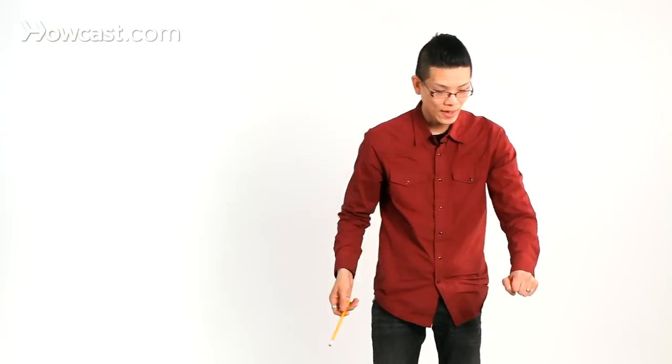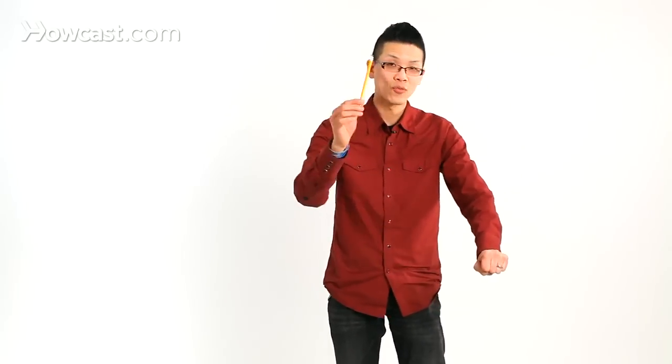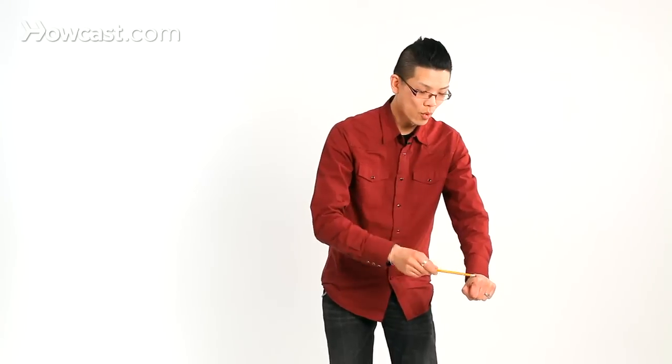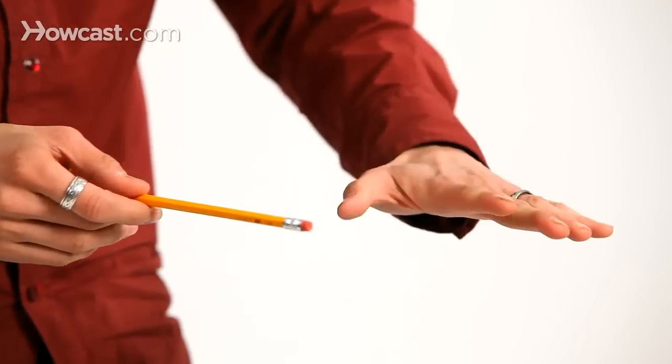So now, your hand comes back out. The bill's no longer there. You say the real magic's going to happen now on the count of three. One, two, three, and the bill vanishes. And that's the explanation for the pencil and bill vanish.